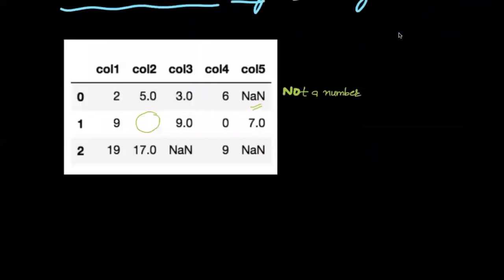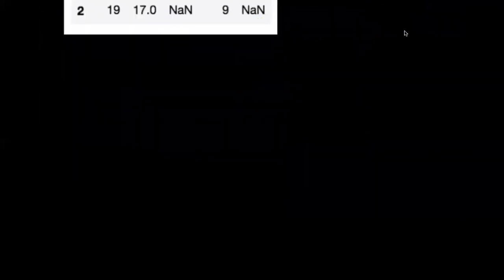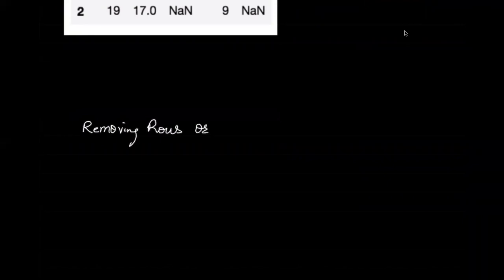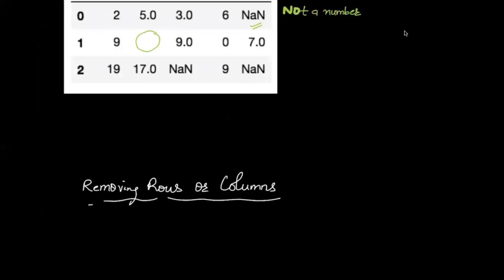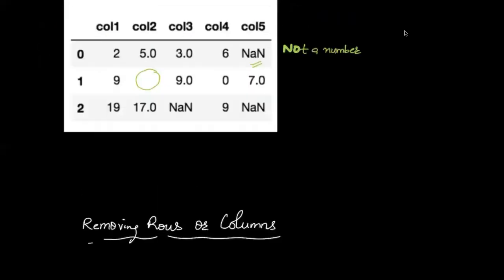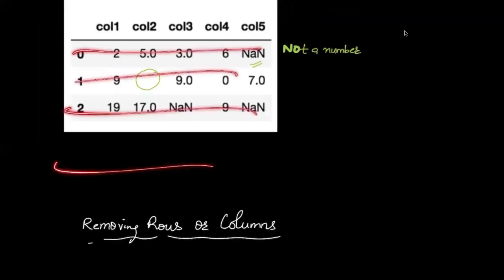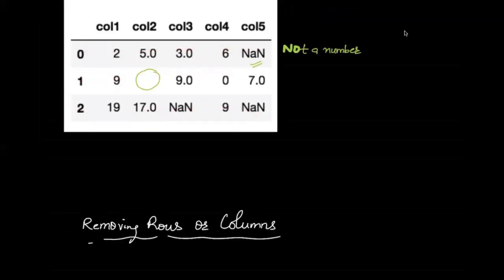The very first basic approach is removing your rows or columns. For example, you may have thousands of rows in the data, and out of those thousand rows there are just 10 rows where you have missing values. In that case, you can remove those 10 rows directly.